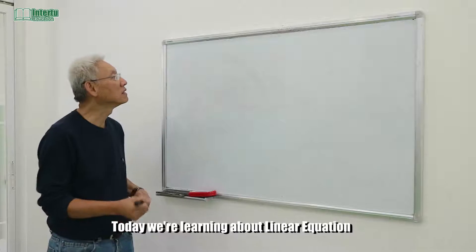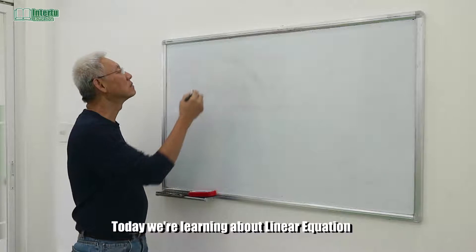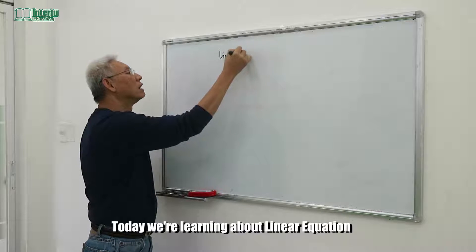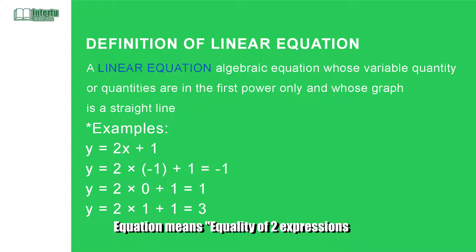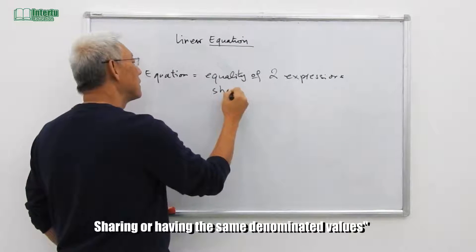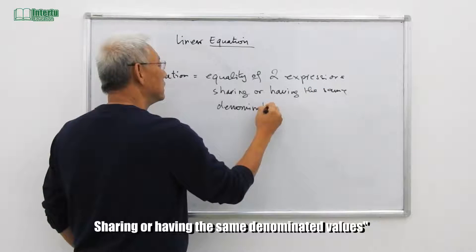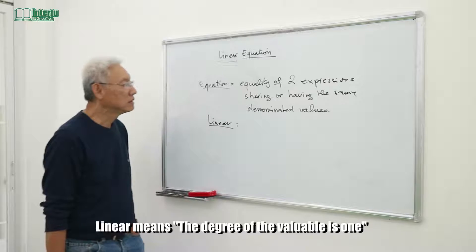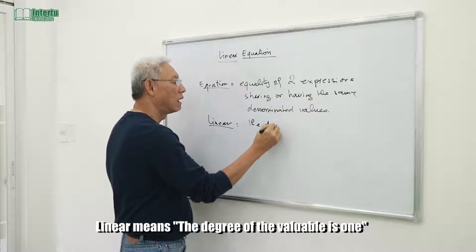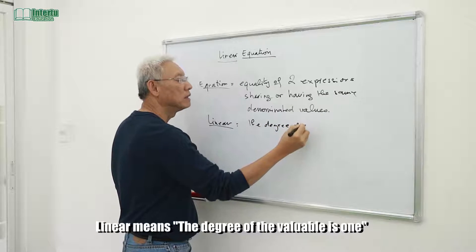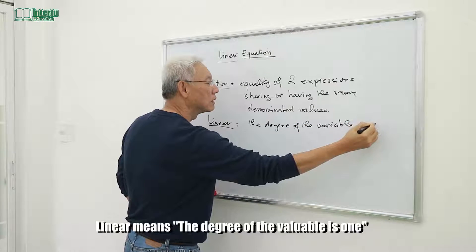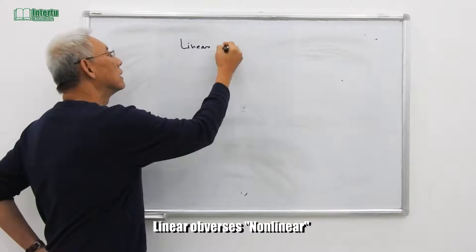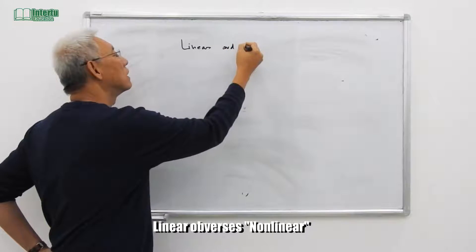All right, today we're learning about linear equations. An equation means equality of two expressions sharing or having the same denominated values. Linear - what is linear? Linear means the degree of the variable is one. Linear versus nonlinear.